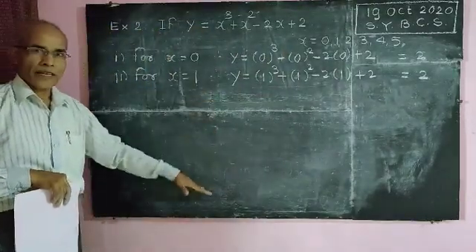Second, for x is equal to 1, y is equal to 1 cube plus 1 square minus 2 into 1 plus 2, so this 2 minus 2 will get cancelled, so only 2. In this way, we are going to find out the remaining values.